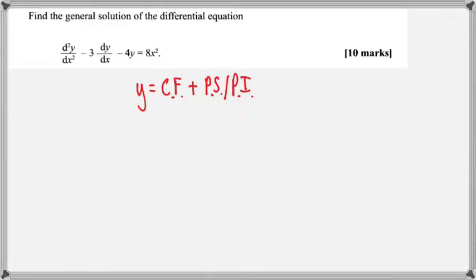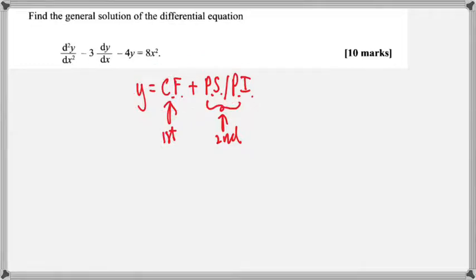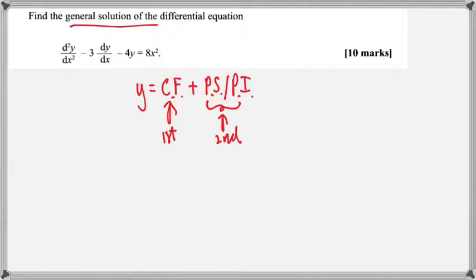So, what we need to do first is find the CF — that's the complementary function. And then we need to find the particular solution or the particular integral, as they call it sometimes. This is basically just outlining what we're going to do to find the general solution to this differential equation. So, the first thing to look at is the CF — let's find the complementary function.